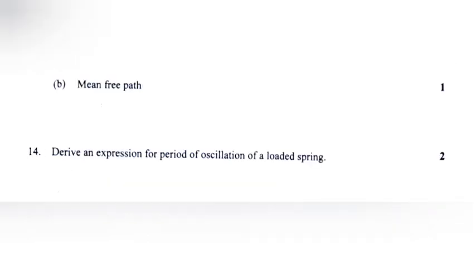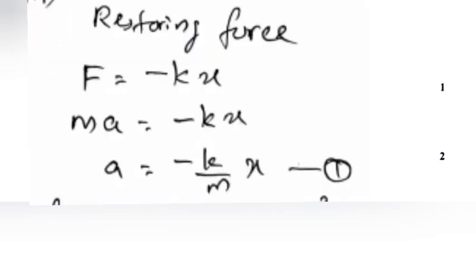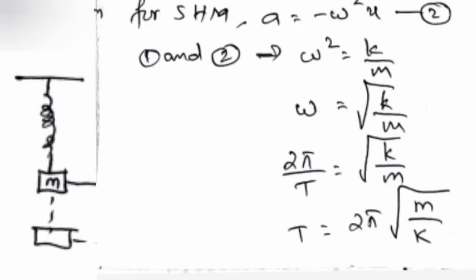Question 14: Derive an expression for period of oscillations of a loaded spring. Answer: For SHM, a is equal to minus omega square x. Equation 1 and 2 implies omega square is equal to k divided by m. Omega is equal to root of k by m. That is, 2 pi by T is equal to root k by m. Answer: T is equal to 2 pi root of m by k.